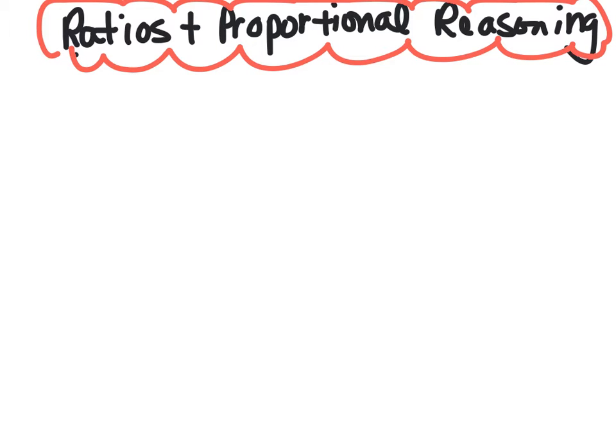All right, let's get some real examples of rates. And it falls under the standard of ratios and proportional reasoning. Let's go through it here. Let's say we have Andrea. She's biking 24 miles in 4 hours. So let's pull out the math.